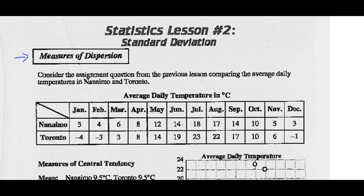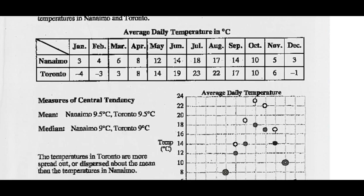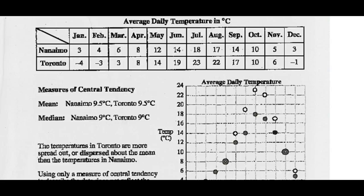Consider the assignment question from Lesson 1. I asked you to find the average daily temperatures in Nanaimo and Toronto — that was question 6 last section. So you found the measure of central tendency. The mean for Nanaimo and Toronto were both 9.5 degrees Celsius, and the median for Nanaimo and Toronto were both 9 degrees Celsius. Yet you look at the data, and we notice they look very different, yet their means and medians are the same.